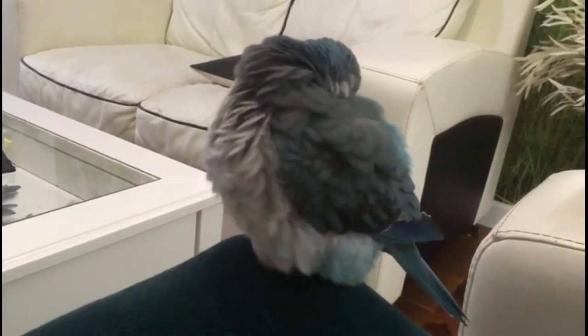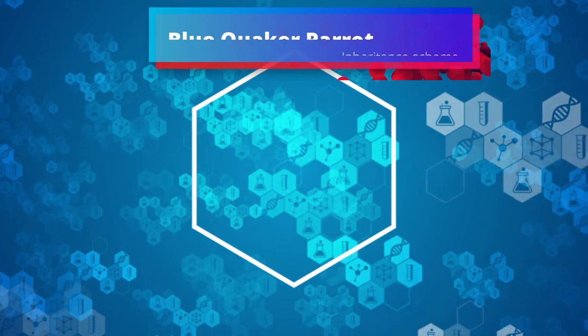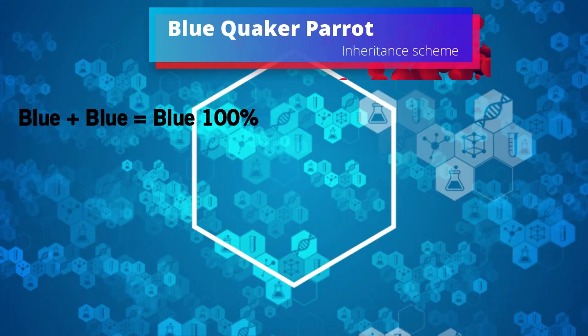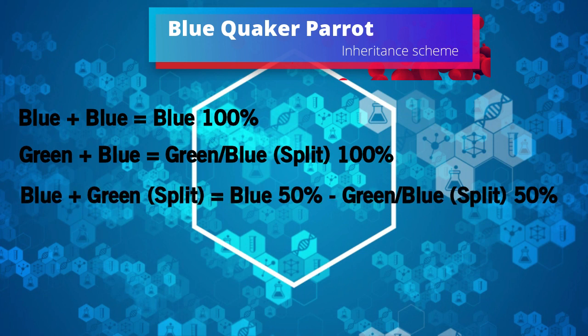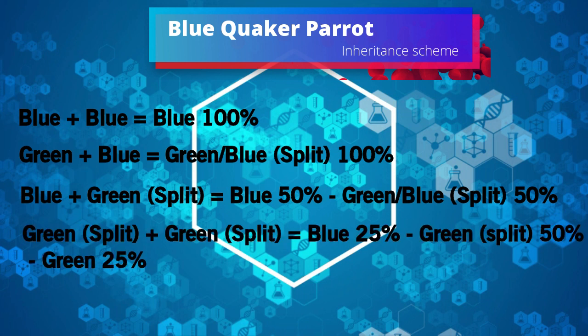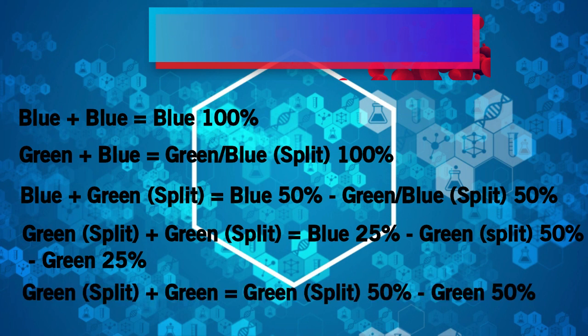Combining the blue mutation with the lutino, we will receive the white bird — albino. Here is the inheritance scheme for blue quaker: Blue x blue gives 100% blue. Green x blue gives 100% green-blue split. Blue x green-blue split gives 50% blue and 50% green-blue split. Green-blue split x green-blue split gives 25% blue, 50% green-blue split and 25% green. Green-blue split x green gives 50% green-blue split and 50% green.